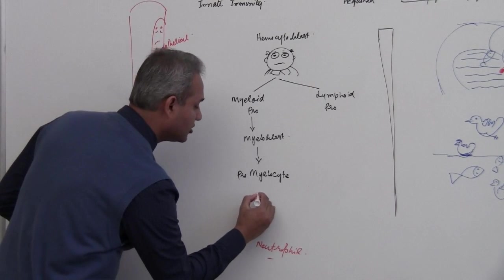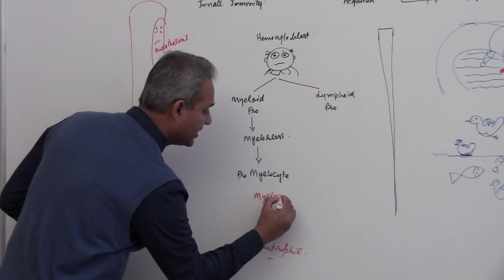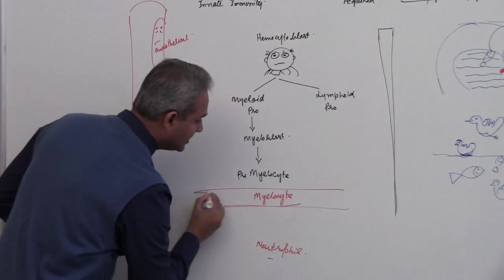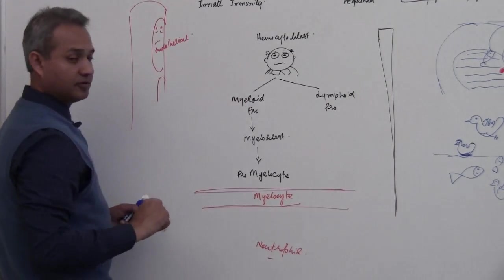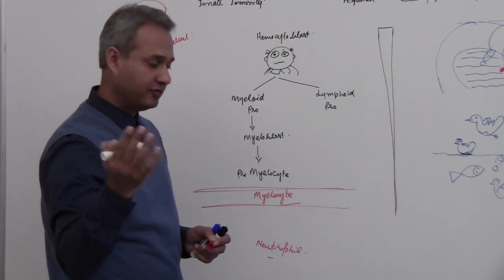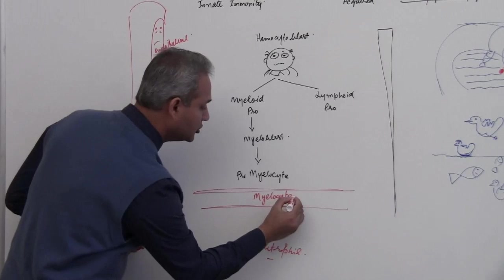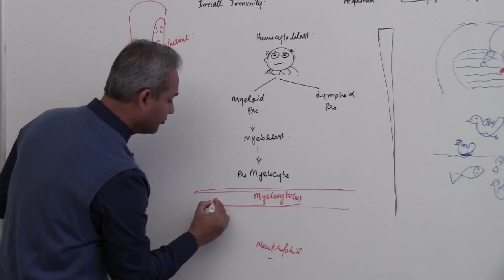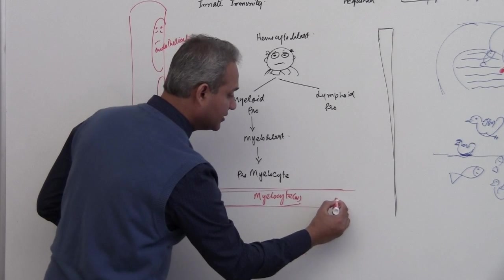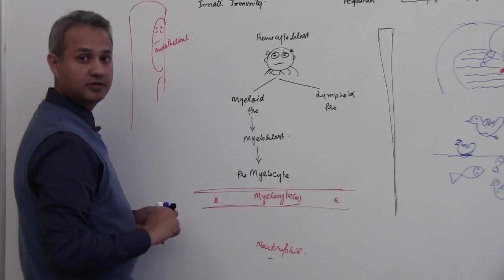There is a cell which is very important called myelocyte. This cell for all three, for the basophils, eosinophils and neutrophils, we get myelocyte neutrophil, myelocyte basophil, and myelocyte eosinophil.